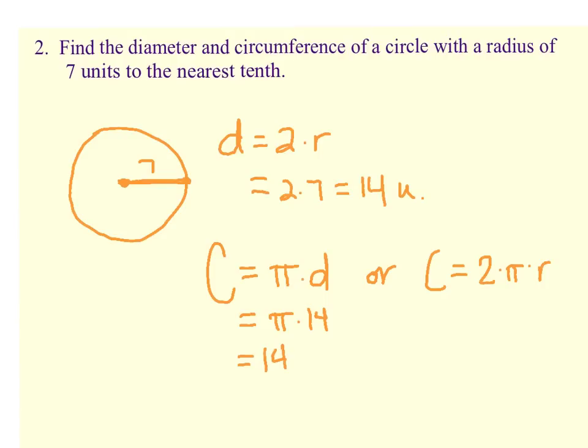So I'm going to just go ahead and plug 14 in for d. And the circumference would be 14 pi units. Now, this did ask us to find it to the nearest tenth. So here's where you would use your calculator. And we are estimating 14 times pi. Your calculator should have a pi button on it. And when you multiply 14 times that pi button, you get 43.982. Well, if we round to the nearest tenth,